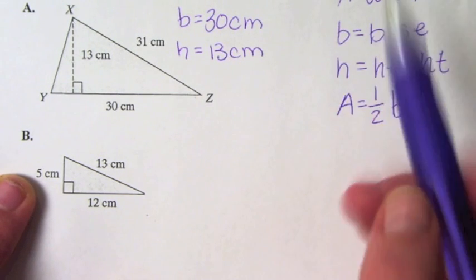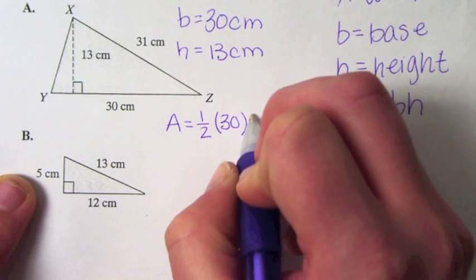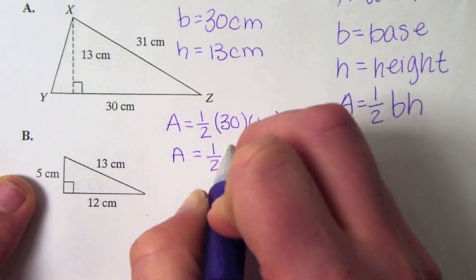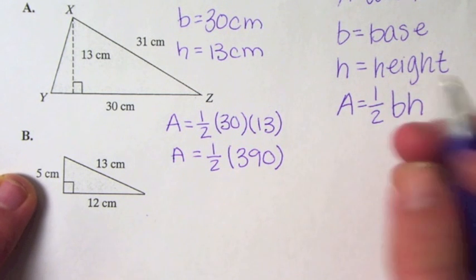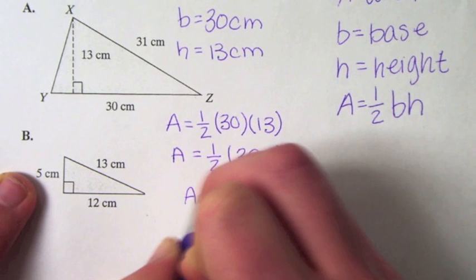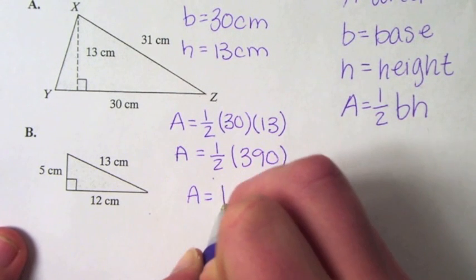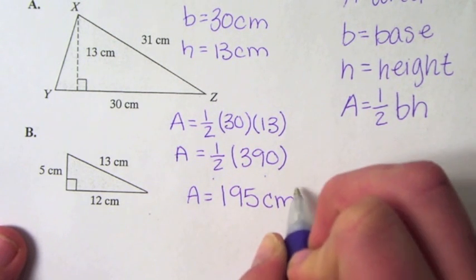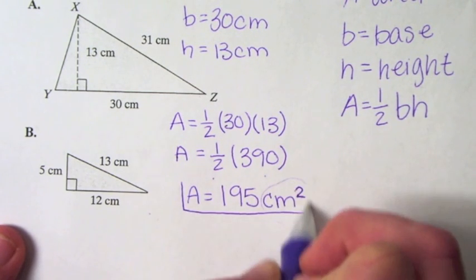Once we've identified those two things, we just plug it in. A is equal to 1/2 times 30, which is our base, times 13, which is our height. We just have to simplify and solve. A is equal to 1/2, and 30 times 13 is 390. So 1/2 times 390 is 195. That is going to be centimeters squared. Take note of the centimeters squared when you're doing units in area. That is the answer to our first example.